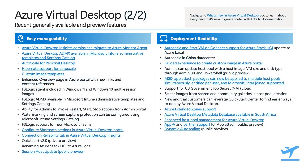Now let's move to manageability and deployment flexibility. FSLogix can now be found in the Azure Marketplace for Windows 10 and Windows 11 multi-session images. Hibernate support at autoscale is in public preview — you will have a better experience as session state persists when the virtual machine hibernates, and when the session host VM starts, the user will be able to quickly resume where they left off. Watermarking and screen capture protection can be configured using Microsoft Intune's session catalog, helping prevent sensitive data from being captured on client devices using specific OS features and APIs.